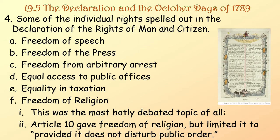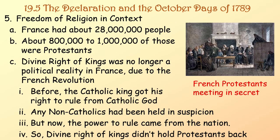Some of the individual rights spelled out in the Declaration of the Rights of Man and Citizen include: freedom of speech, freedom of the press, freedom from arbitrary arrest, equal access to public offices, equality in taxation, and freedom of religion. This last one was the most hotly debated topic of all. Article 10 gave freedom of religion, but limited it to — quote — 'provided it does not disturb public order.'